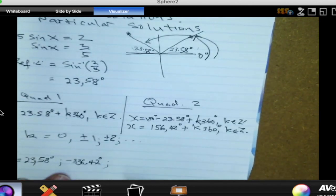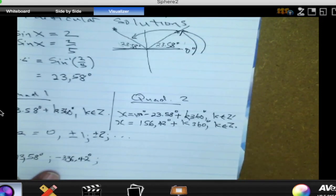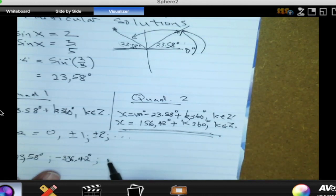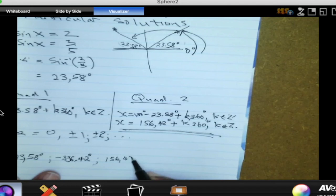Do the same thing. I can just continue the list now. This is the general solution from quadrant 2. Let's put K equal to 0. What answer do we get? 156.42. Is 156.42 in the interval? Yes. Right, so we need to put it down. We need that one. So that is for K equal to 0.